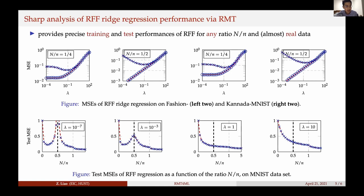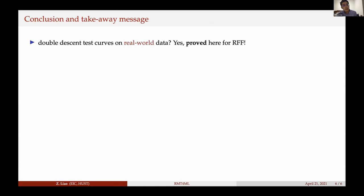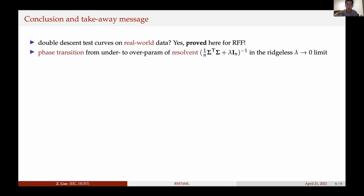Focusing on the test MSE plotted as a function of the ratio N over n, we observe and can prove the double descent phenomenon on real-world data. So to conclude: do we have a double descent test curve on real-world data? Yes. We prove this here for the random Fourier feature model, and hopefully this can be extended to more involved random feature-based models.